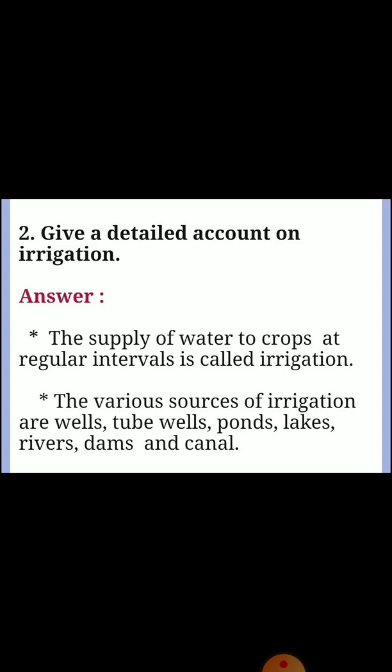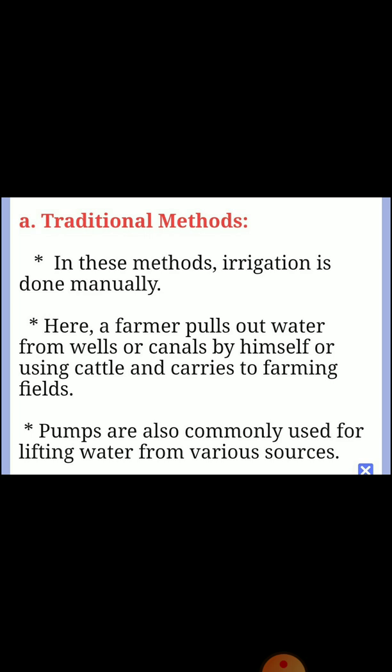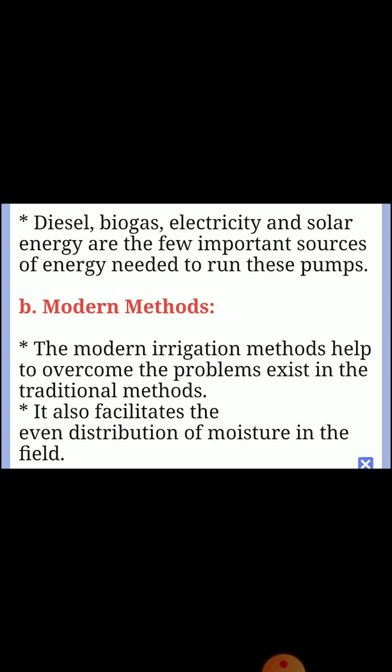Second detailed question: Give a detailed account on irrigation. Irrigation is the supply of water to crops at regular intervals. Various sources of irrigation include wells, tube wells, ponds, lakes, rivers, dams, and canals. Effective irrigation is the controlled and uniform supply of water to crops in the required amount at the right time with minimum expenditure. Irrigation can be carried out by two methods: traditional and modern. In traditional methods, irrigation is done manually - a farmer pulls water from wells or canals by himself or using cattle, and carries it to farming fields. Pumps powered by diesel, biogas, electricity, or solar energy are also used.